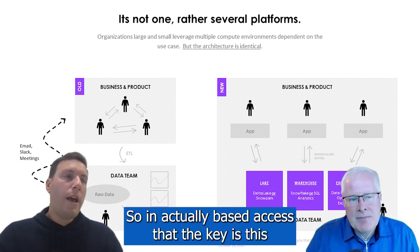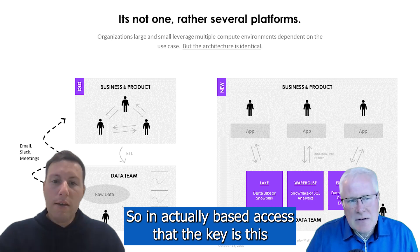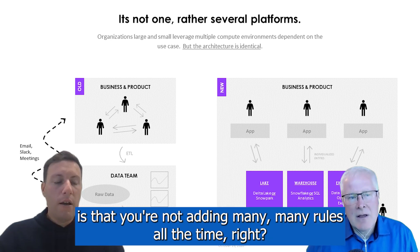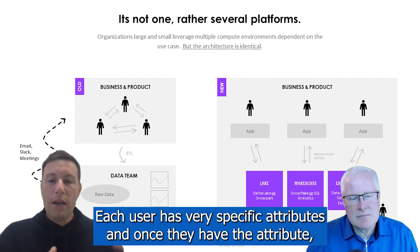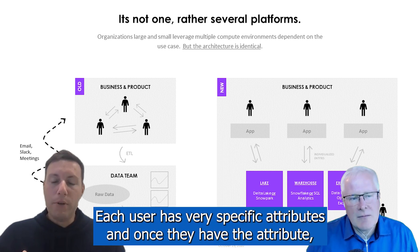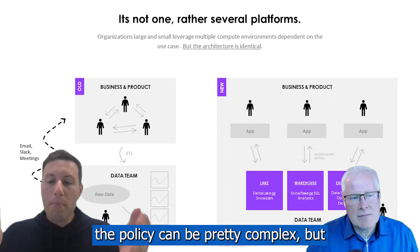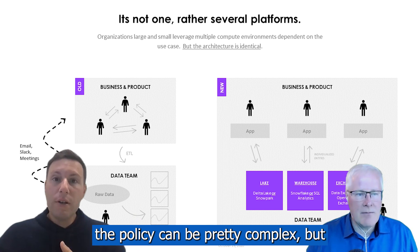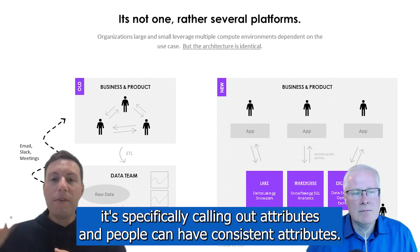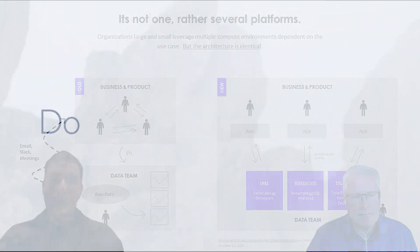In attribute-based access, the key is that you're not adding many, many rules all the time. Each user has very specific attributes. And once they have that attribute, the policy can be pretty complex, but it's specifically calling out attributes. And people can have consistent attributes.